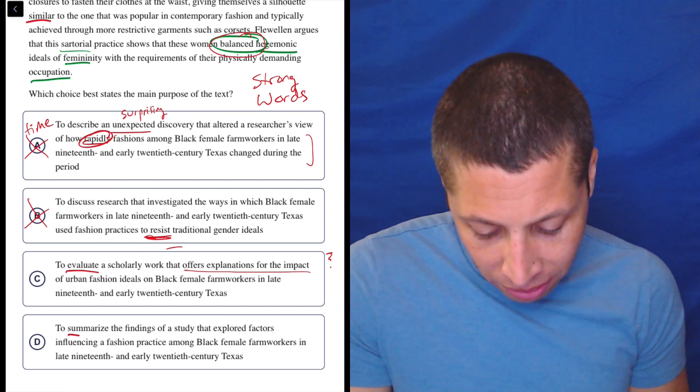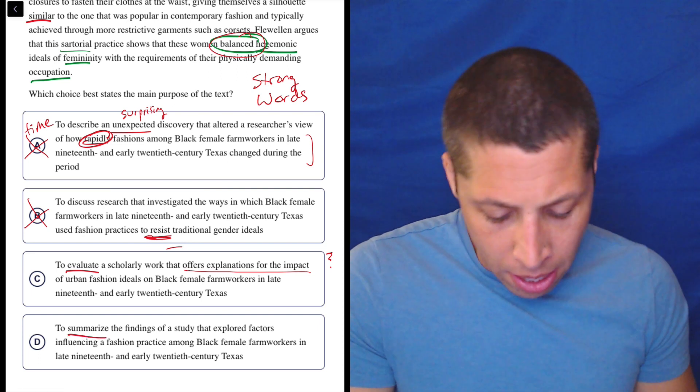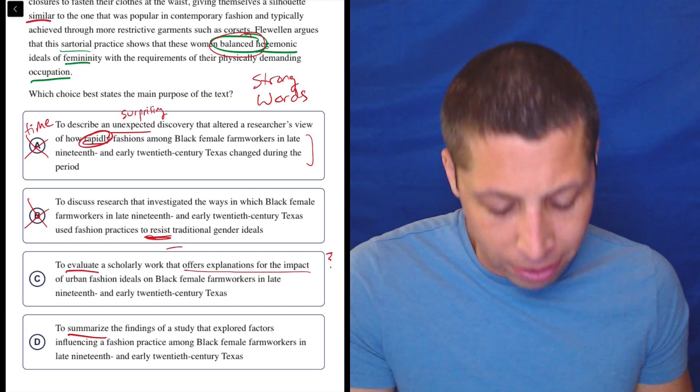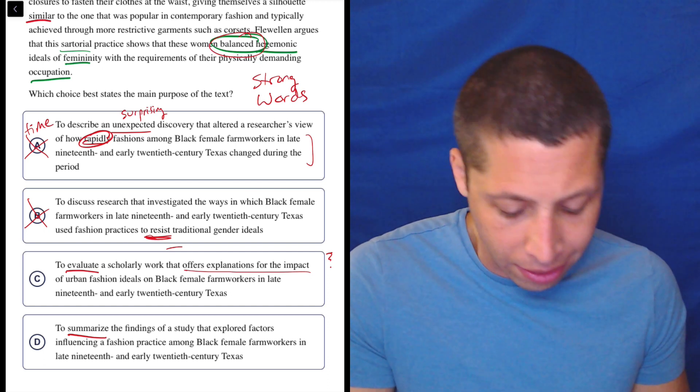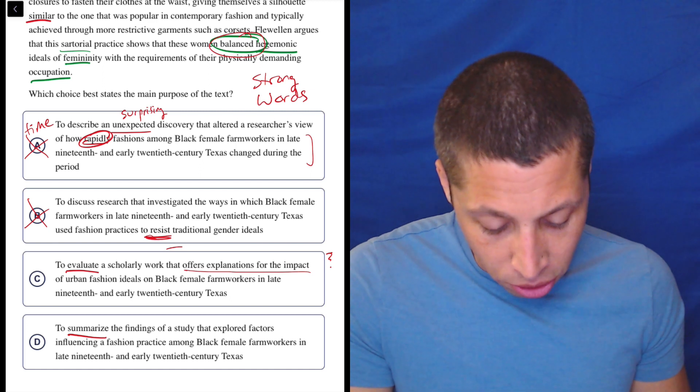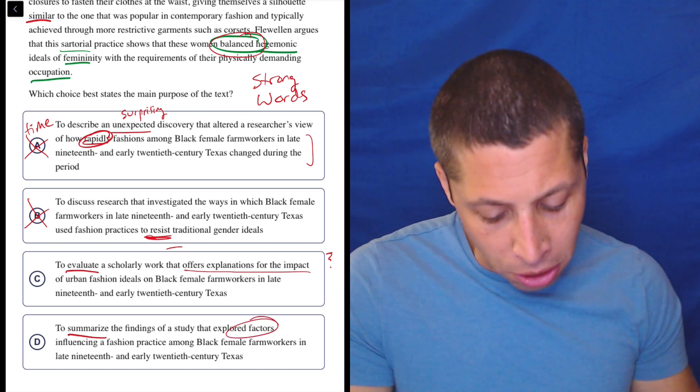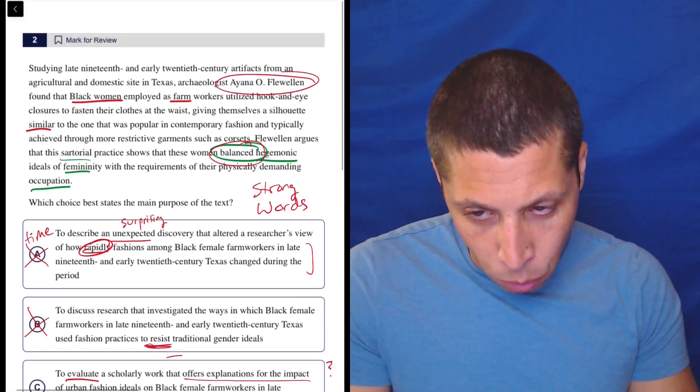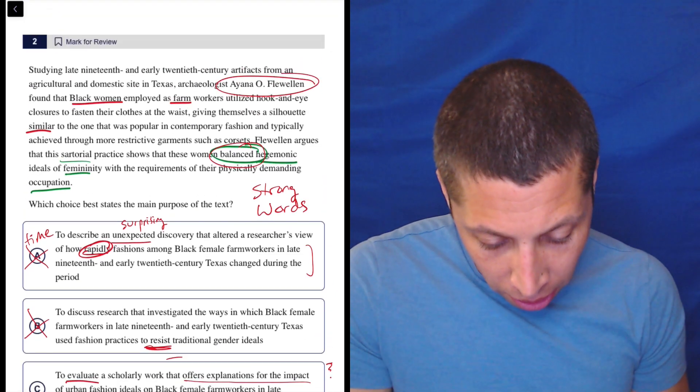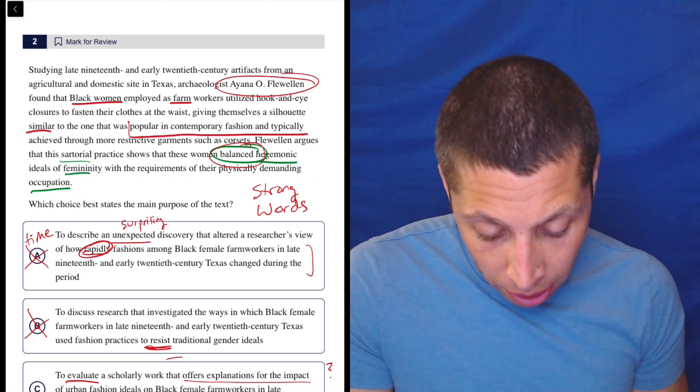D, to summarize the findings of a study. Summarize is weaker than evaluate. Summarize the findings of a study that explored factors influencing a fashion practice among black female farm workers in late 19th and early 20th century Texas. Okay. So I could turn this into a question. What are the factors influencing these workers? Well, if I go to the passage, the factors are, it was a popular fashion. So they were influenced. That's one factor is that it was just popular.